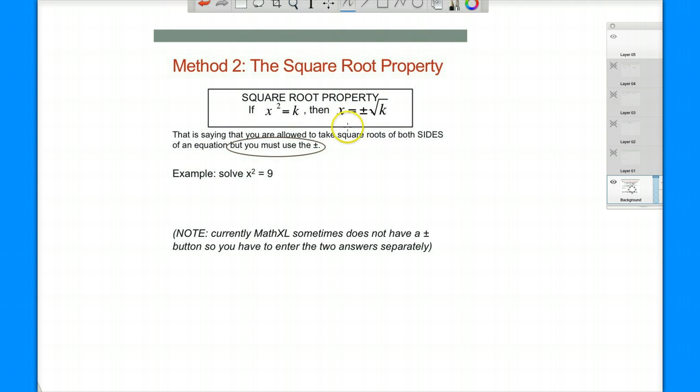This is saying you can take square roots of both sides, but there is a but—you have to add the plus minus. Have to.